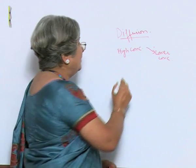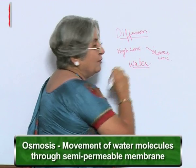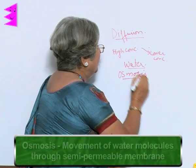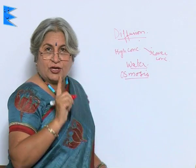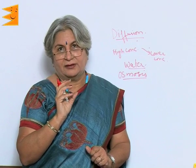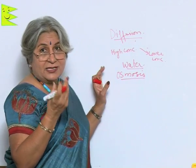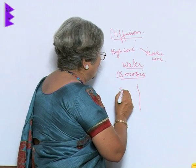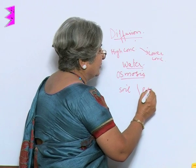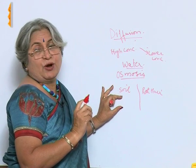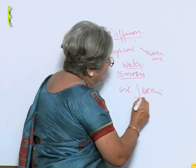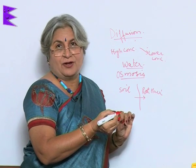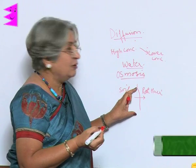Not only gases can move — even water can move. There is a special type of diffusion called osmosis. Diffusion is mainly of solute molecules — molecules which can be dissolved in a solvent. Water is the universal solvent. When there is a semi-permeable membrane, say this is soil and this is a root here — the root has less water while if soil is properly watered there will be more water, so it will move inside. Water or the solvent can move from its higher concentration to lower concentration through a semi-permeable membrane.